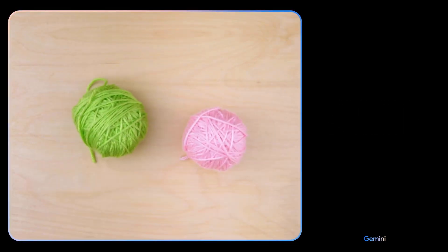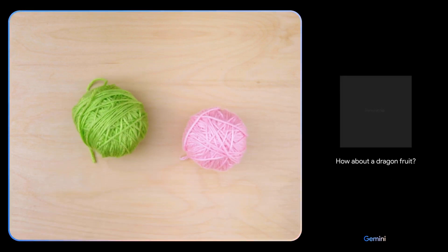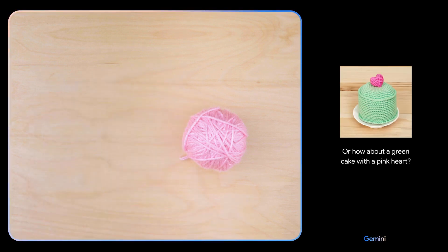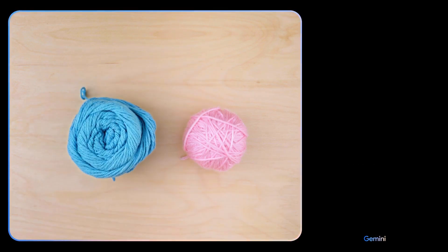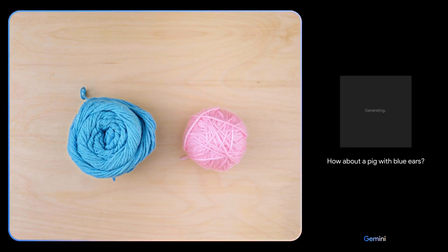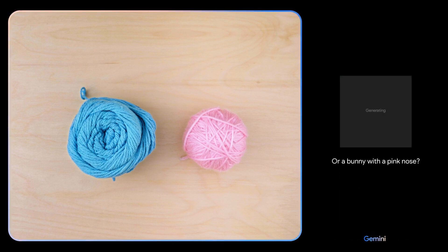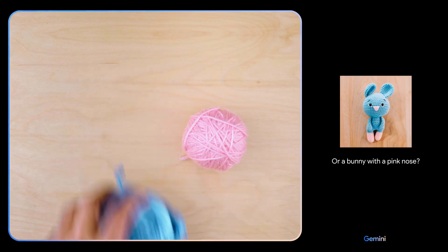Give me some ideas for what I could make with this. I see pink and green yarn. How about a dragon fruit? Or how about a green cake with a pink heart? Okay. How about these colors? And maybe show me some animals. Okay. Now I see blue and pink yarn. How about a pig with blue ears? Or an octopus? Or a bunny with a pink nose? I'll keep those in mind.